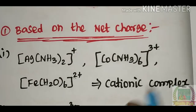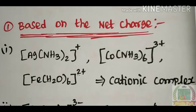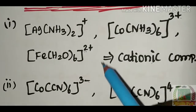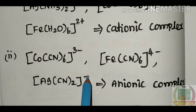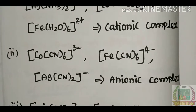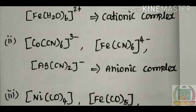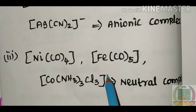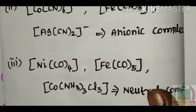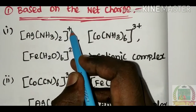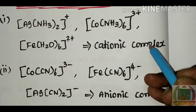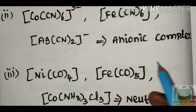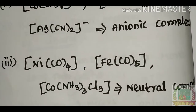If the complex carries a negative charge, it is called an anionic complex. If there is no charge on the coordination sphere, it is called a neutral complex. So to summarize: positive charge means cationic, negative charge means anionic, and no charge means neutral.